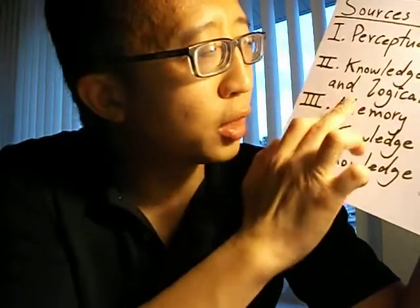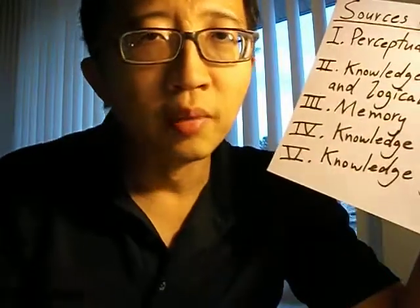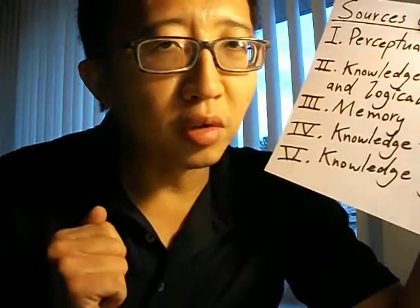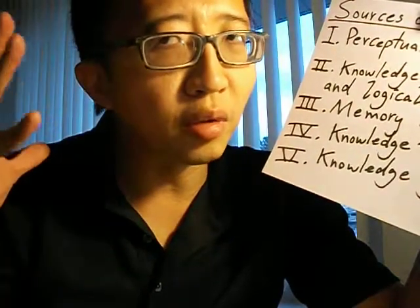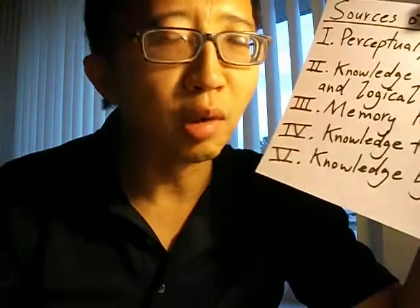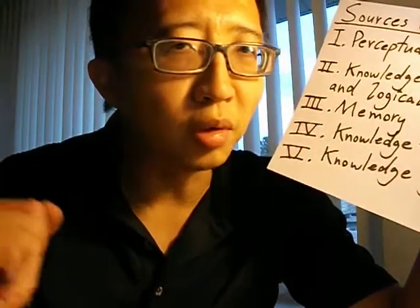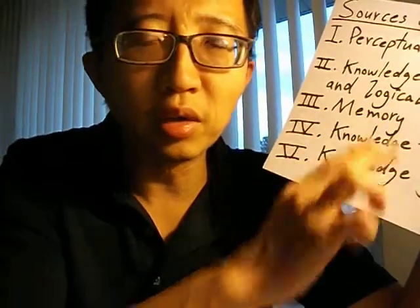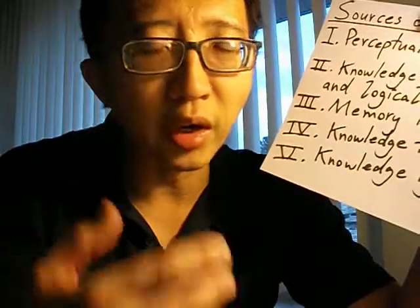The third source of knowledge is memory knowledge. Very often we know things by remembering them. For example, I might remember that there is a tree with green leaves outside my window even if I'm not standing by my window right now — I can recall this from memory. Memory is one very important source of knowledge about the world and about ourselves.